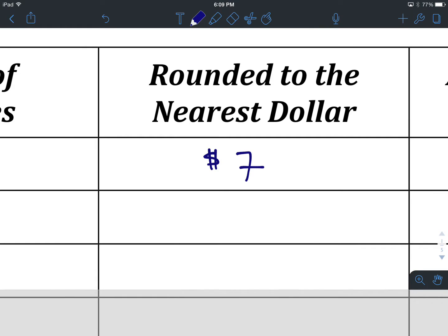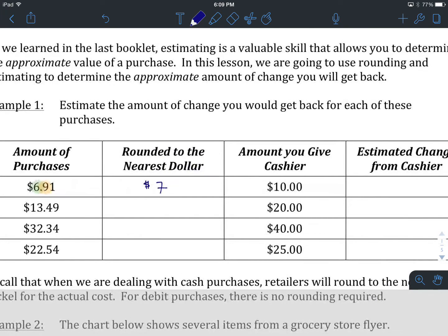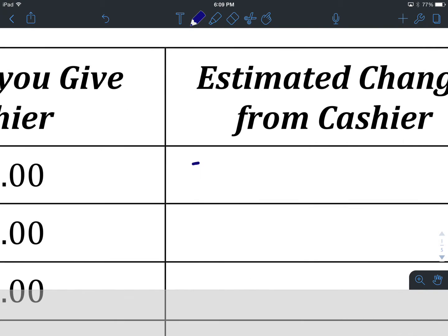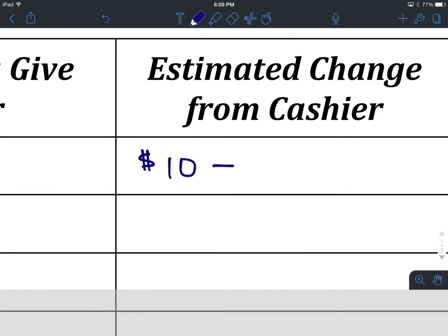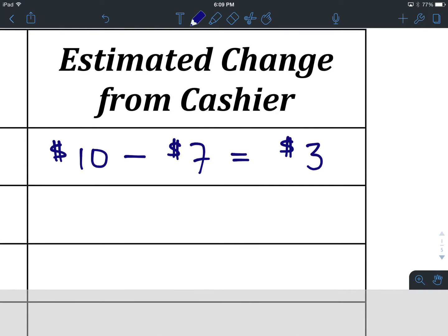The amount you give a cashier in the next column is $10. So our estimated change from the cashier will be the difference between what we give the cashier and what is our estimated cost going to be. The difference between $10 and $7 is $3. So that will be our estimated change from our cashier.